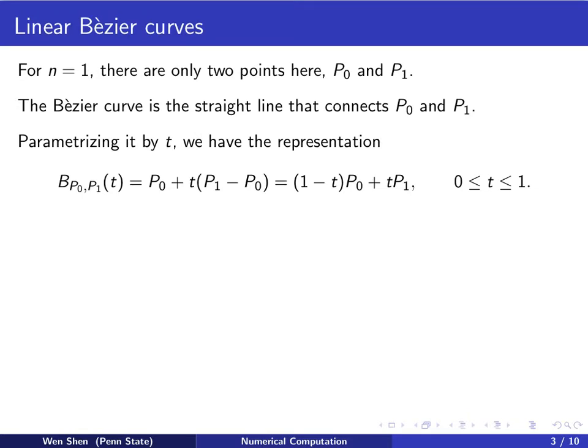One can parameterize the line by the parameter t, and we have the representation B_{P0,P1}(t) = P0 + t(P1 - P0). One can also rearrange the terms and write this as (1-t)P0 + tP1. Here, 1 minus t and t are numbers where P0 and P1 are points which can be vectors. The expression is valid for t ranging from 0 to 1.